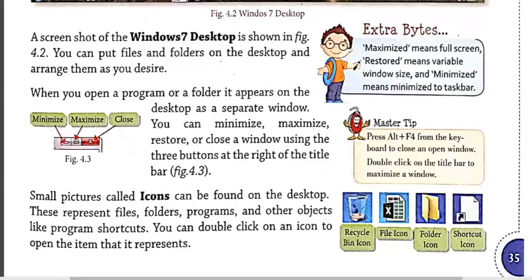In this video we will discuss about the components of the desktop screen of Windows 7. Let's start with the three buttons placed at the title bar of any window. These three buttons are the Minimize, Maximize, and Close button. The button with a small horizontal line is called the Minimize button. If you click on it, it will reduce the window to the taskbar in the form of a button, and the name of the application will be displayed on that button.